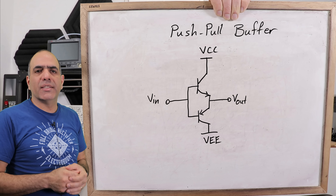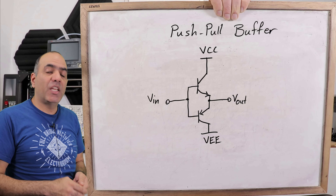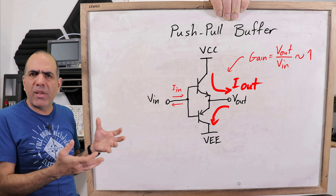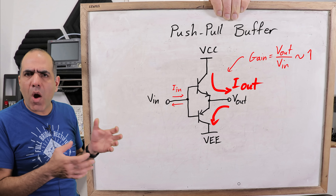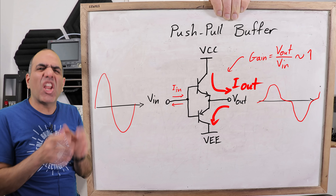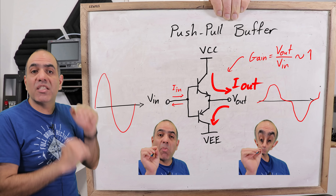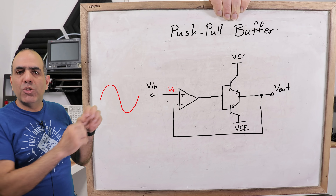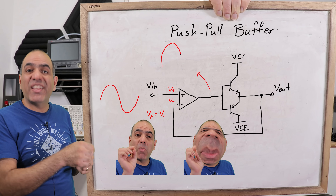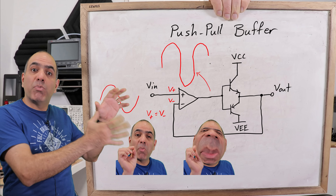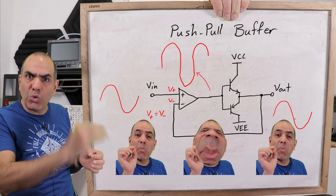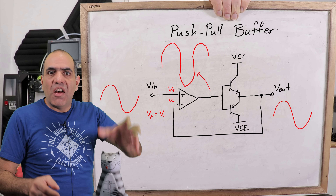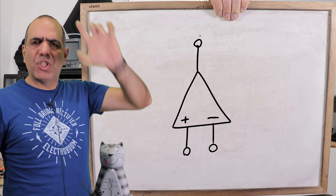Take this transistor push-pull circuit — you use it to buffer, it draws small input current and outputs massive current, like in audio amplifiers. Its gain is around one but it distorts the signal heavily by cutting the mid section. You add an op-amp to it with feedback from its output. The op-amp, trying to keep its inputs equal, sends a signal with an inverse distortion to the push-pull buffer — that, passed through it, creates the same signal as the input. Huge gain is awesome, and op-amp is king.